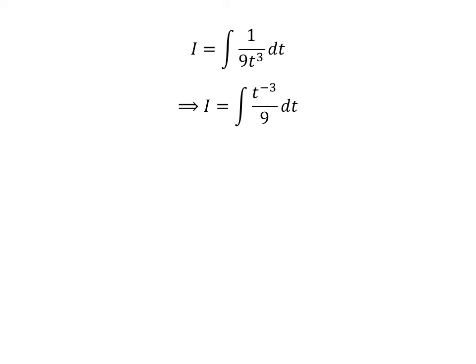For simplification, let us express the integrand in negative exponent form. Thus, i is equal to the integral of t raised to the power of minus 3, divided by 9, with respect to t.